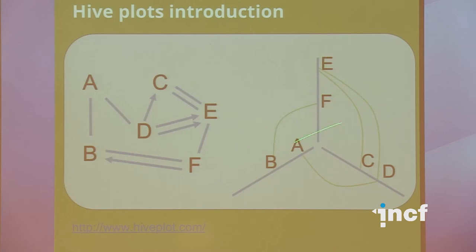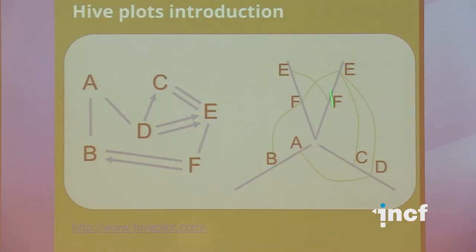You'll notice that by doing this you don't render the connections between, say, E and F, or A and B, or C and D, because they're on the same axis. You can choose to do that with one more extension of a hive plot, which is that you can clone an axis. So we take this middle axis, we split it, put exactly the same nodes in exactly the same positions, and now we can also render the connections between them. You'll see why this is important in a moment.